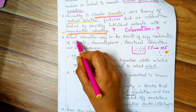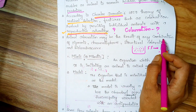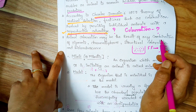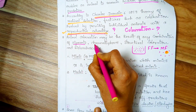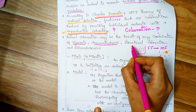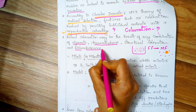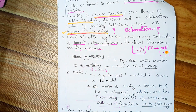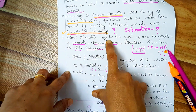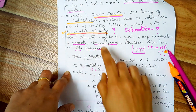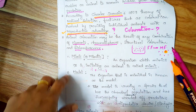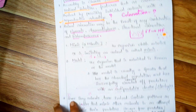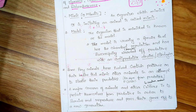Animal coloration may result from any combination of pigments, chromatophores (chroma means color), structural coloration, or bioluminescence. Because of these, animals get their coloration. Luminescence means light — so bioluminescence refers to light produced by living organisms.